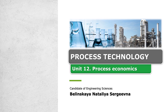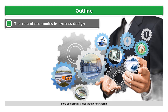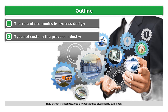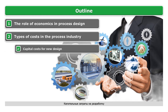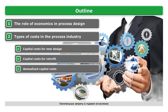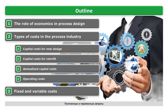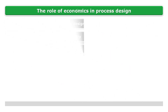Process Technology Unit 12: Process Economics. This lecture covers the role of economics in process design, types of costs in the process industry, capital costs for new design, capital costs for retrofit, annualized capital costs, operating costs, and fixed and variable costs.